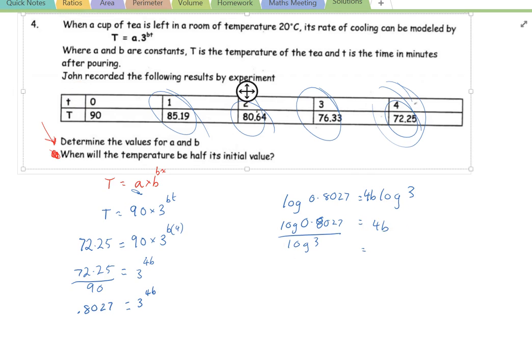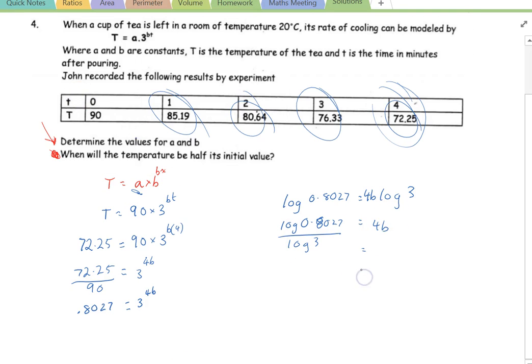Whatever that is. So, that's going to give me a negative answer. That's negative 0.2000 equals 4B. And then that gives me a B value of negative 0.2000 divided by 4, which is approximately negative 0.05.